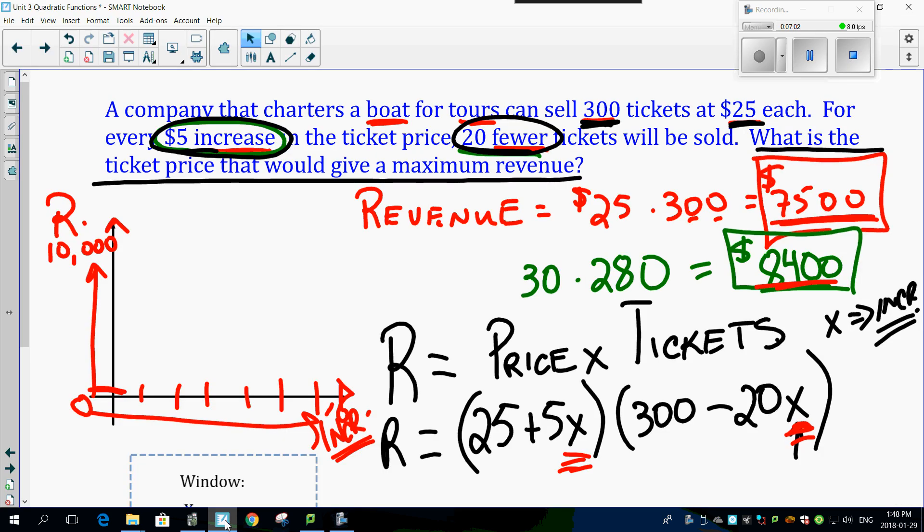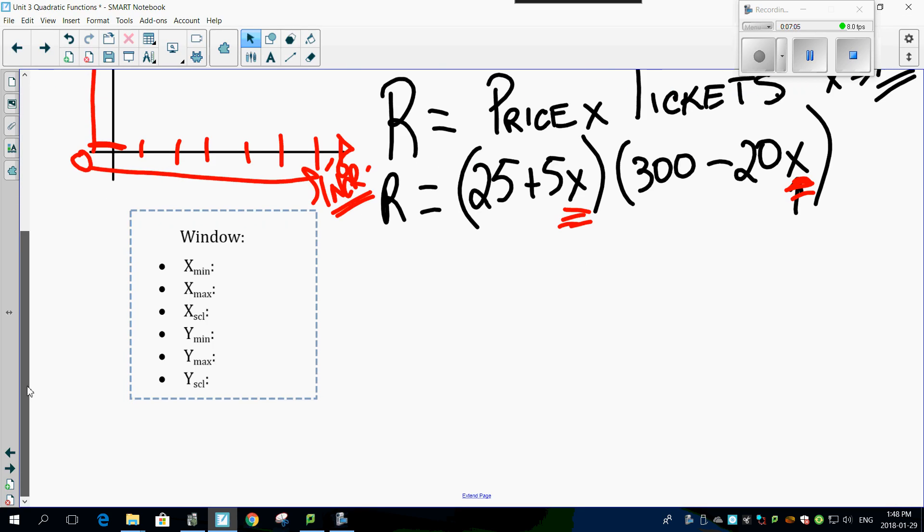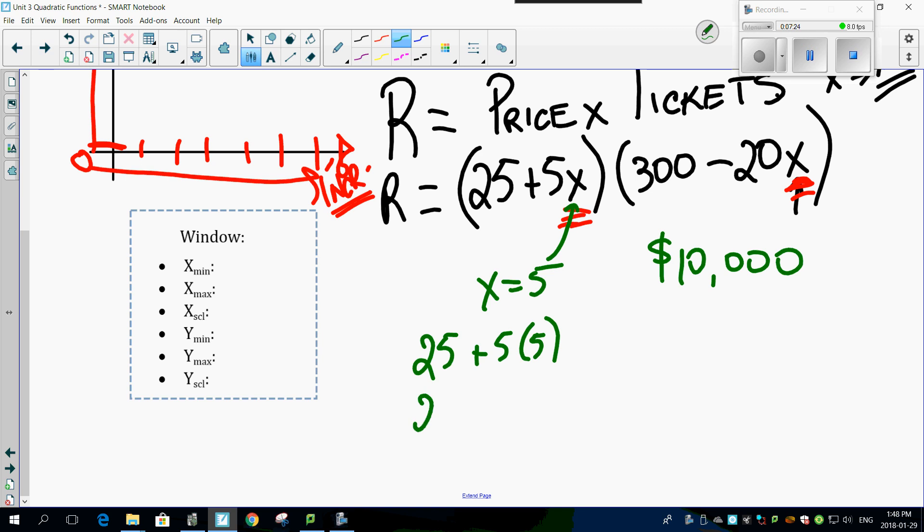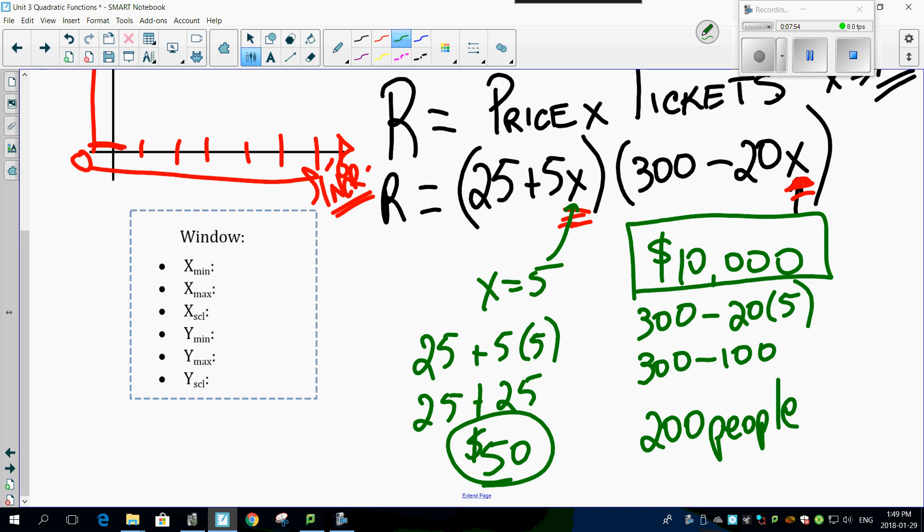So what does this mean? We've got 5 increments, so x equals 5 at a maximum amount of money of $10,000. So question, how many people are going and what's the price going to be? Well remember, 5 increments means 25 plus 5 times 5, which is another 25. Look at this. This guy doubled the ticket price to $50. And check this out, this is now going to be 300 minus 20 times 5. 20 times 5 is 100, I've got 300 minus 100 gives me 200 people. He's going to have 100 empty seats. But so what? If he charges $50, he's going to have a whole heck of a lot more money.